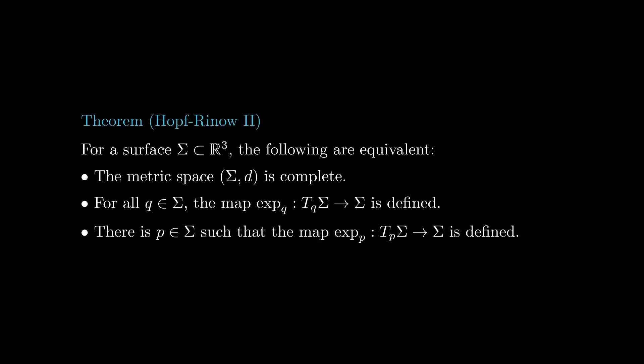To finish this lesson, we mention the second part of the Hopf-Rinow theorem. It turns out that for a surface sigma, the metric space (sigma, d) is complete if and only if, for all q in sigma, the exponential map exp is defined on T_q sigma. And this happens if and only if there is a single point p for which the exponential map is defined on T_p sigma. This proof is long and technical, so we will leave it for later. Recall that by the theorem we mentioned at the beginning, all these equivalences hold provided that sigma is a closed subset of R3. And that's it for today, see you next time!